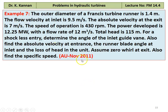Next, Example number 7 from November 2011 question paper. The outer diameter of a Francis turbine runner is 1.4 meter. The flow velocity at the inlet is 9.5 meters per second. Absolute velocity at the exit is 7 meters per second. The speed of operation is 430 RPM. The power developed is 12.25 megawatts with a flow rate of 12 meter cube per second. The total head is 115 meter. For a shockless entry, determine the angle of the inlet guide vane. Also find the absolute velocity at the entrance, runner blade angle at the inlet, loss of the unit, and the specific speed. Assume zero whirl at the exit.